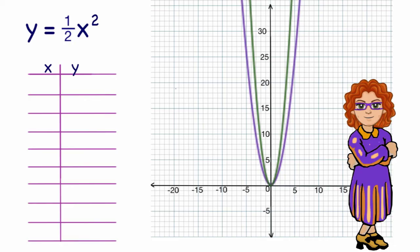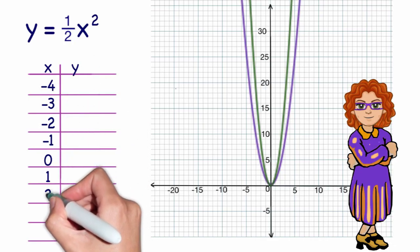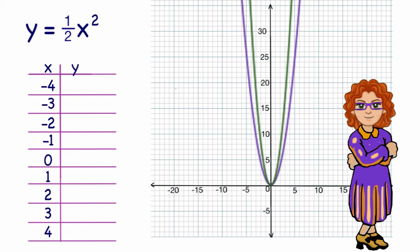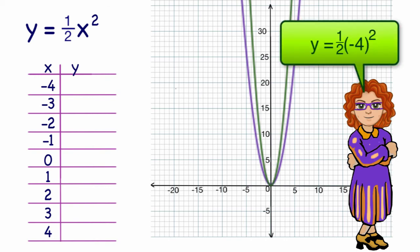Again, I think I'll use the numbers from negative 4 to positive 4. So when x is equal to negative 4, I would have y is equal to 1 half negative 4 squared. Negative 4 times negative 4 is a positive 16. And half of that is 8. So y would equal 8.